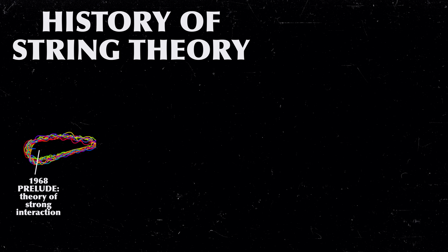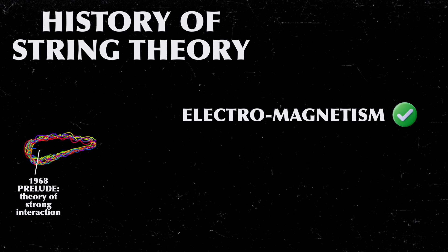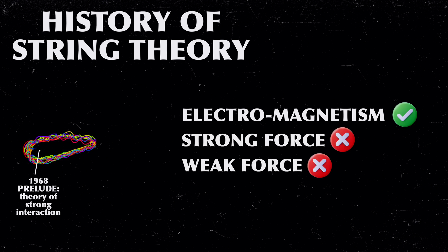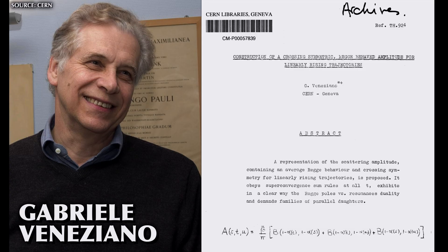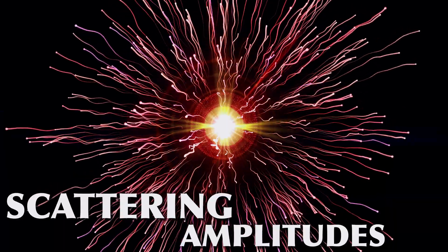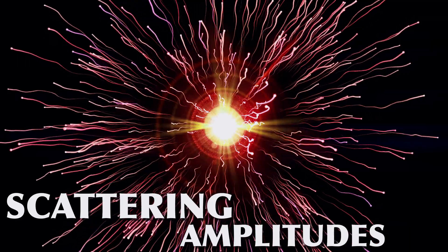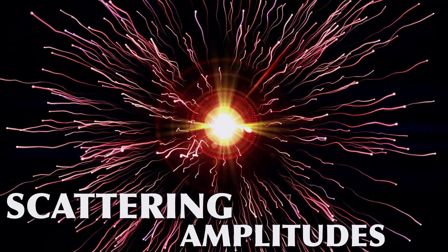The story of string theory starts in 1968, in a time before there was a standard model. Physicists had successfully formulated quantum electrodynamics but were struggling with building a model for the strong and the weak interaction. At this time, a physicist at CERN, Gabriele Veneziano, came up with his dual resonance model to describe scattering of particles under the influence of the strong force. It was a neat method and very useful for calculating some particular results.